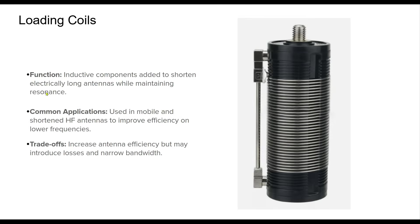Loading coils are used in antenna systems to electrically lengthen shortened antennas, allowing them to resonate at a lower frequency without requiring a physically longer structure. This is especially useful in mobile and HF applications where space constraints limit full-sized antennas. While loading coils improve resonance, they can introduce losses and reduce bandwidth. Proper coil placement and design help balance performance and efficiency, making them essential for compact antenna solutions.